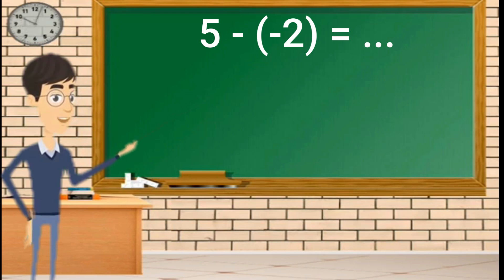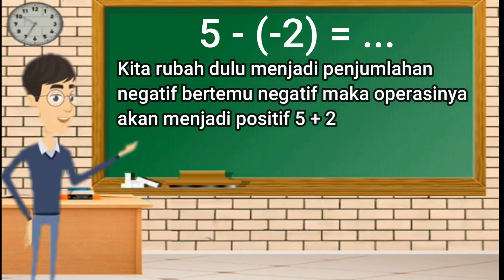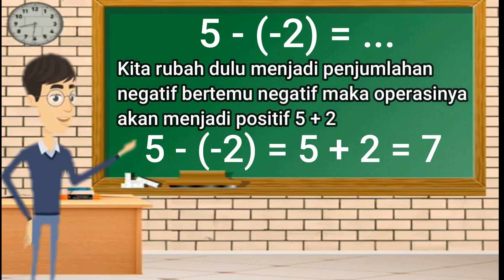5 dikurangi negatif 2. Sebelum kita melanjutkan penghitungannya, terlebih dahulu kita ubah dulu menjadi penjumlahan. Sama halnya dengan yang sebelumnya, negatif bertemu negatif maka operasinya akan berubah menjadi positif. Jadi 5 dikurang negatif 2 sama dengan 5 ditambah 2, hasilnya adalah positif 7.